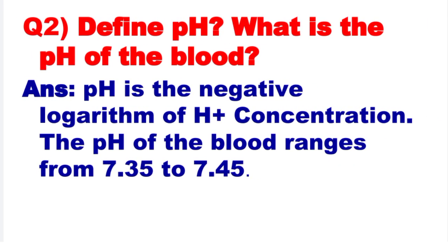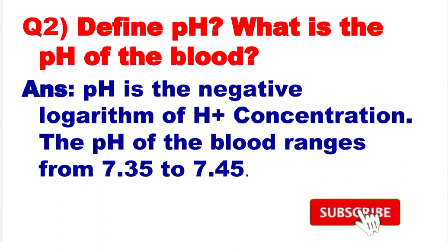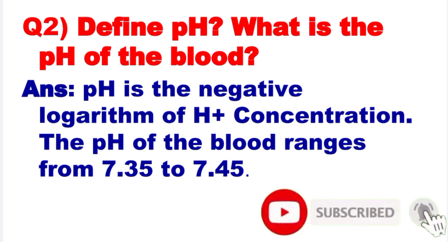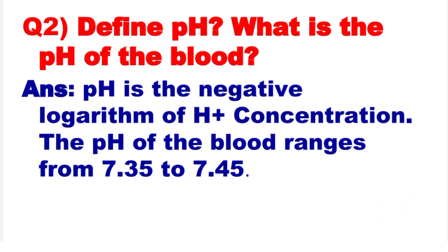Next: Define pH. What is the pH of blood? pH is the negative logarithm of H+ concentration. The pH of blood ranges from 7.35 to 7.45.